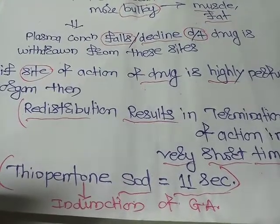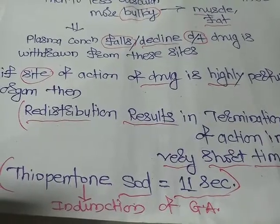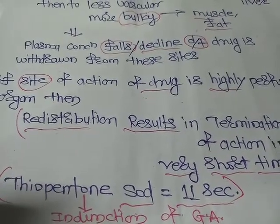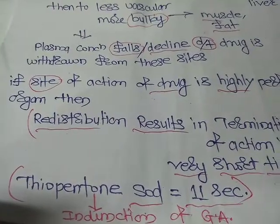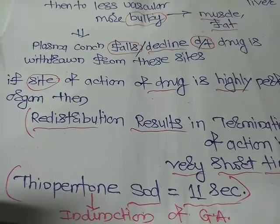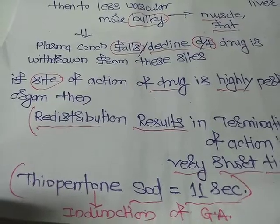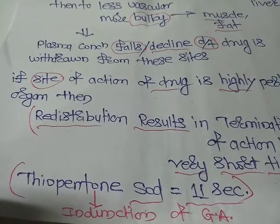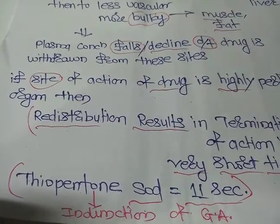Eleven seconds is not enough to induce general anesthesia. So for that, we have to give a loading dose of thiopentone sodium, which will increase the duration of action of thiopentone sodium for up to 4 to 5 minutes. That is why we use thiopentone sodium for the induction of general anesthesia. This is the redistribution phenomenon of a drug.